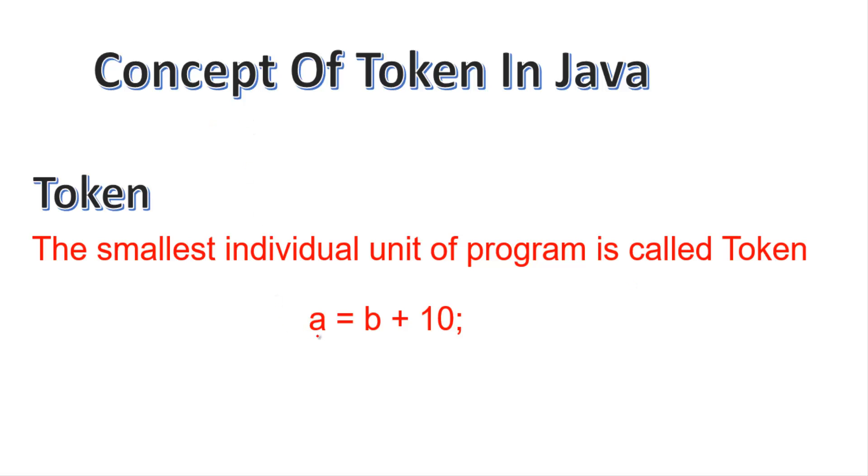So here there are few components. Here is a, here is b, here is 10, equal to sign is here, there is an operator here, and a semicolon. Now each has a purpose.